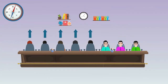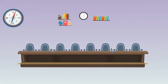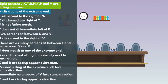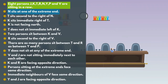Some of them facing north and some of them facing south, but not necessarily in the same order. First, choose the best statement to solve the problem. One of the statements is: N sits at one of the extreme end. This is the best statement to solve this problem easily. So skip all the statements before this statement.